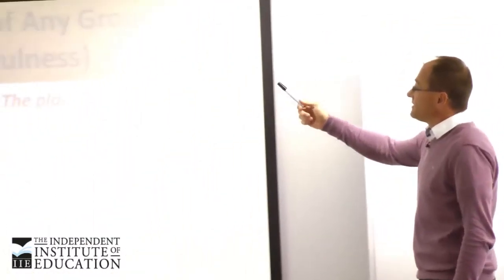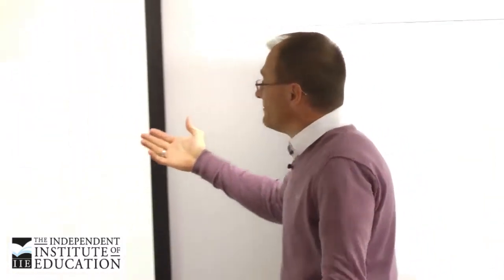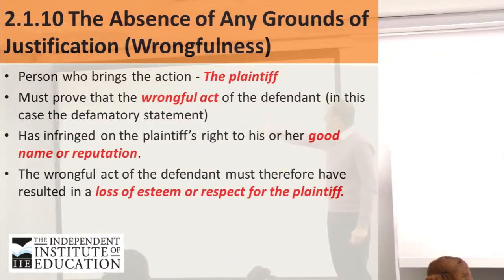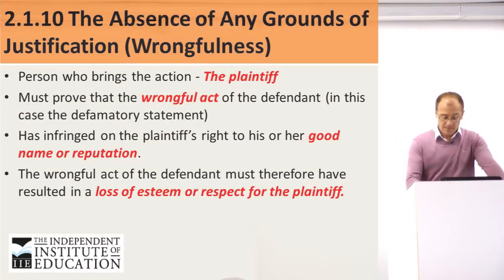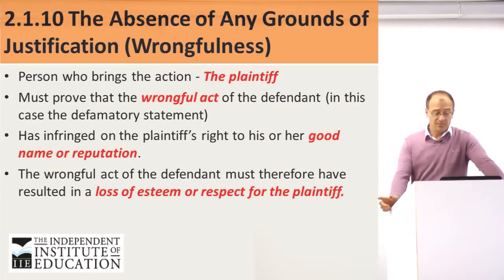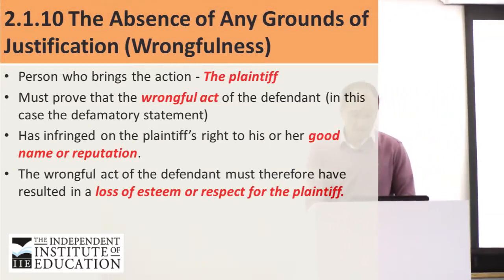Now we get into a very interesting section: the absence of any grounds of justification, the absence of wrongfulness. What is wrongfulness? Wrongfulness is when I am doing something wrong — for example, I publish something that is not true. The person who brings the action is always the plaintiff in a civil case. That plaintiff must prove the wrongful act of the defendant — in this case the defamatory statement. You must also prove that it has infringed on the plaintiff's right to a good name or reputation.